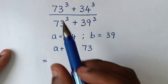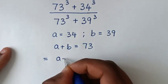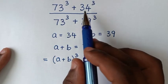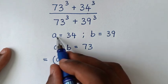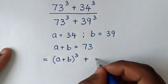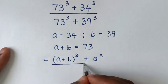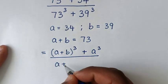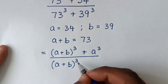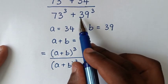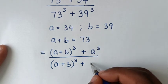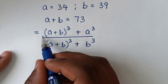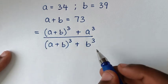We substitute a, b, and a plus b. So 73 power 3 becomes (a plus b) power 3, then plus 34 power 3 becomes a power 3, over 73 power 3 which is (a plus b) power 3, then plus 39 power 3 which is b power 3. Then in the next step, in the numerator and the denominator,